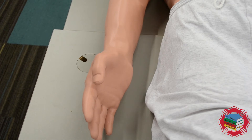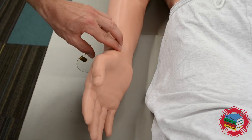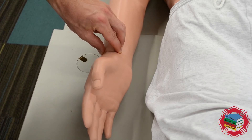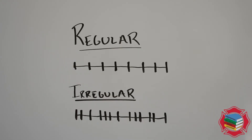In order to determine the patient's pulse rate, we must first determine if they have a regular or an irregular pulse. When you palpate the artery, pay attention to how the beats are spaced. Here we see a visual representation of a regular pulse and an irregular pulse. Each vertical line indicates a heartbeat — the regular is evenly spaced, the irregular is not evenly spaced.